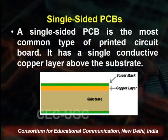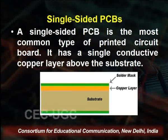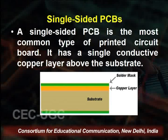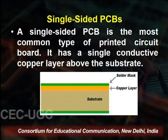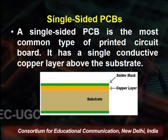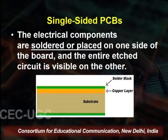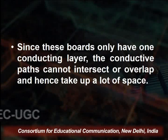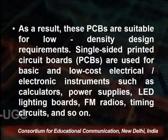The first type is the single-sided PCB, the most common type of printed circuit board. It has a single conductive copper layer above the substrate. On the diagram we can see the base substrate, the copper layer printed on it, and the solder mask on top. Electrical components are soldered on one side of the board and the entire etched circuit is visible on the other. Since these boards have only one conducting layer, conducting paths cannot intersect or overlap.